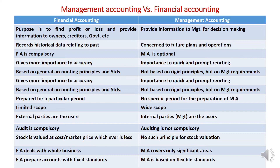Now, the difference between management accounting and financial accounting. Financial accounting helps in finding out profit or loss and provides information to owners, creditors, and government. But management accounting provides information to management for decision making. Financial accounting uses historical data, whereas management accounting deals with future plans and operations.